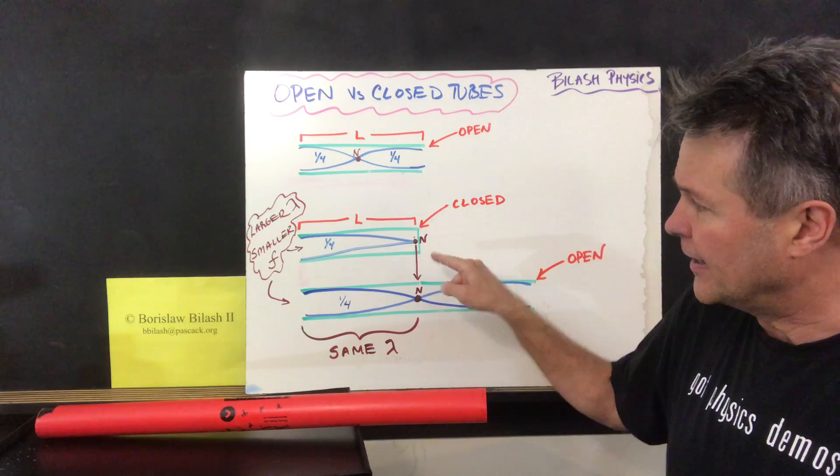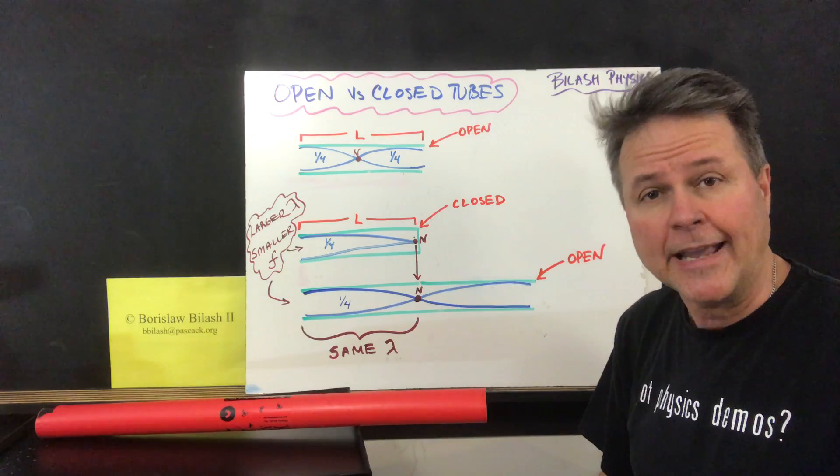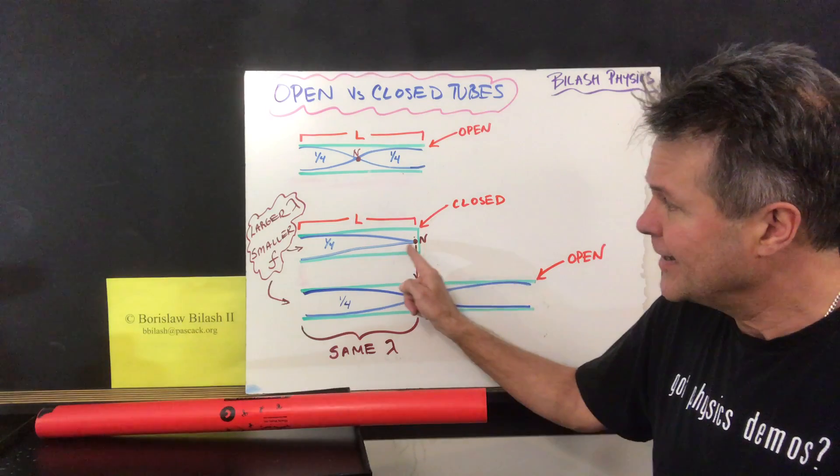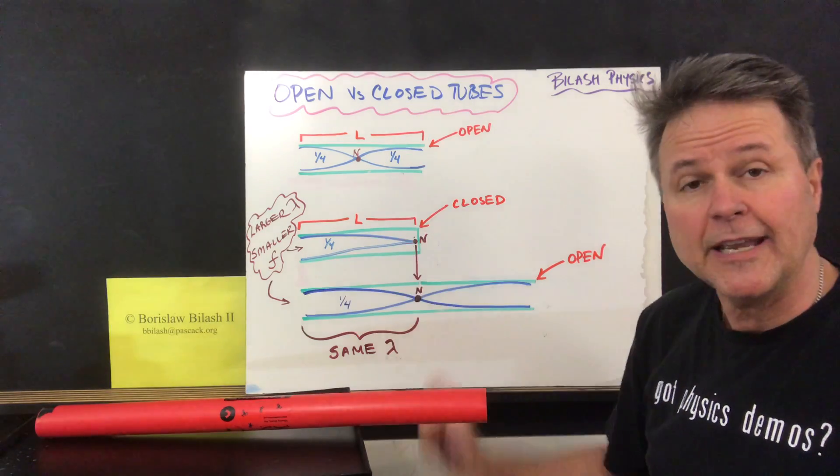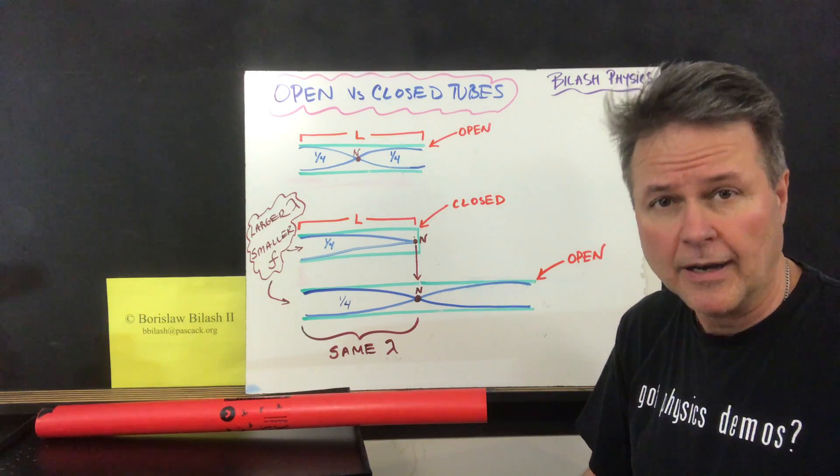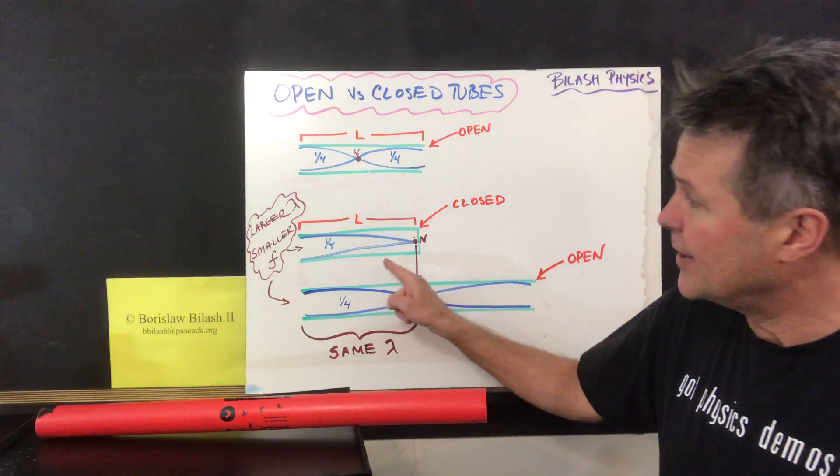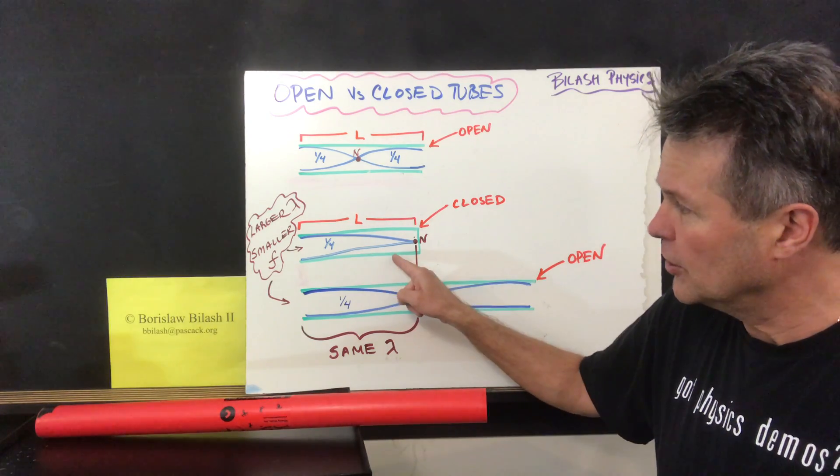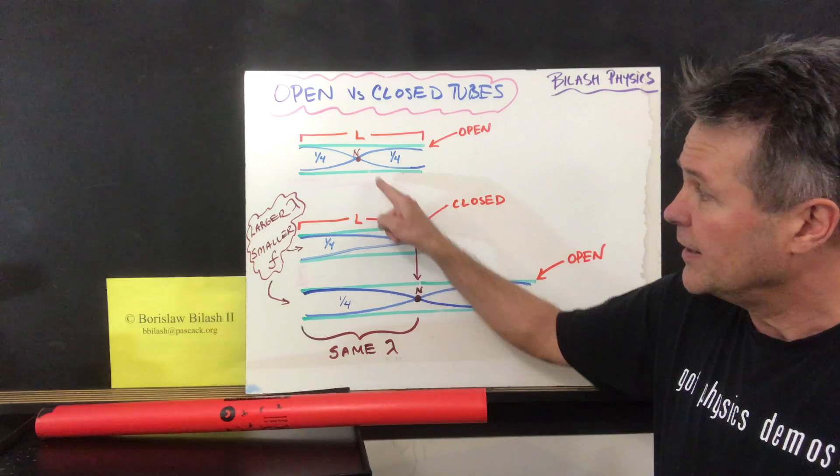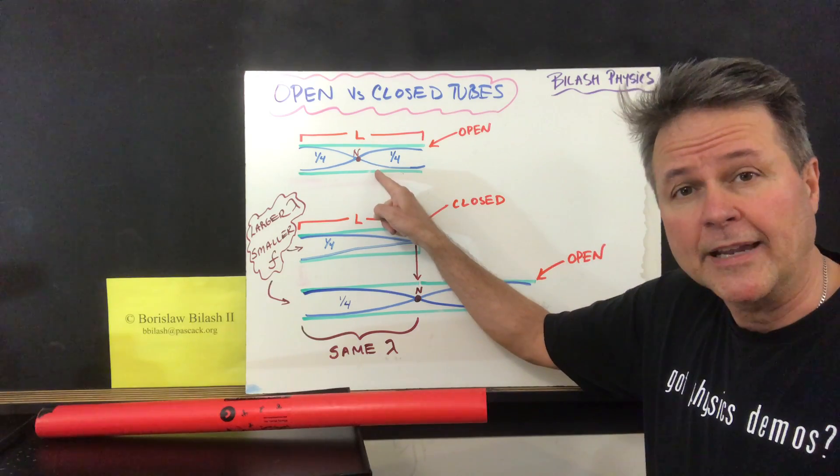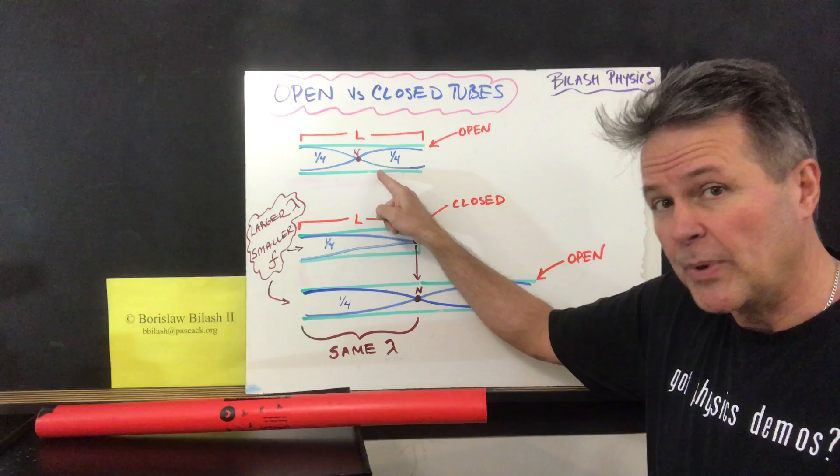But if we close the end, the node is at one end, at the closed end of the tube, which means the entire tube contains only one quarter of the wavelength. So that means that the wavelength of a closed-ended tube is larger than the wavelength in an open-ended tube.